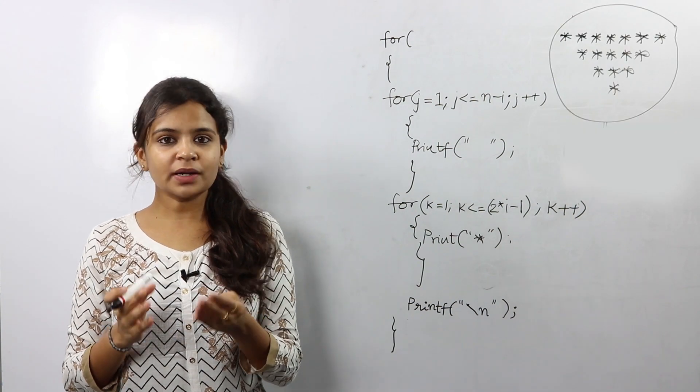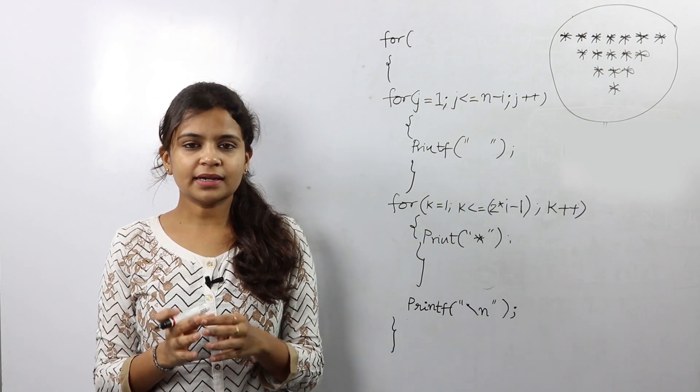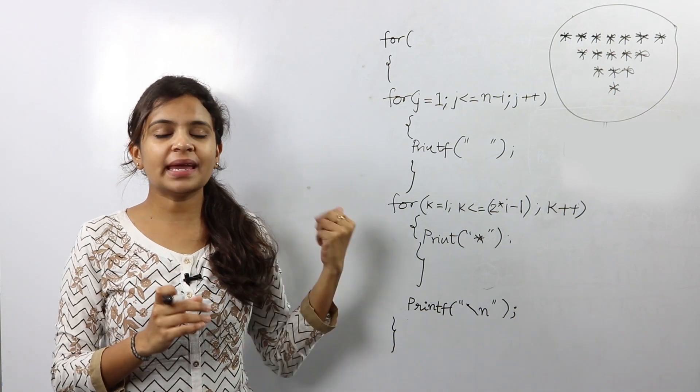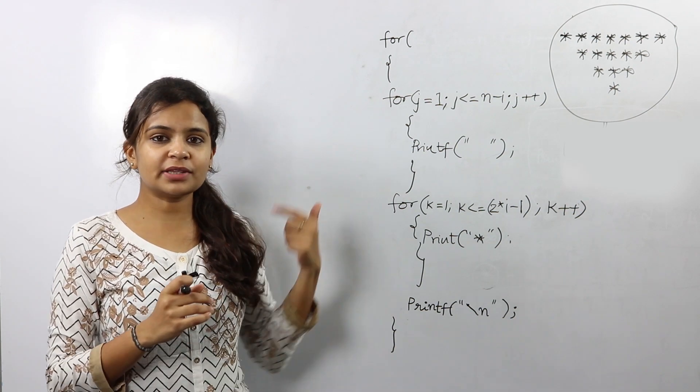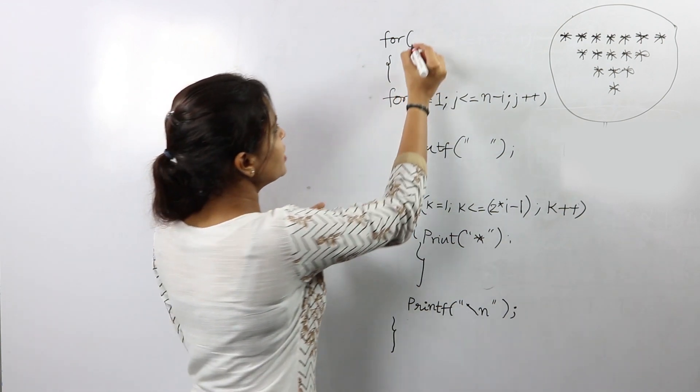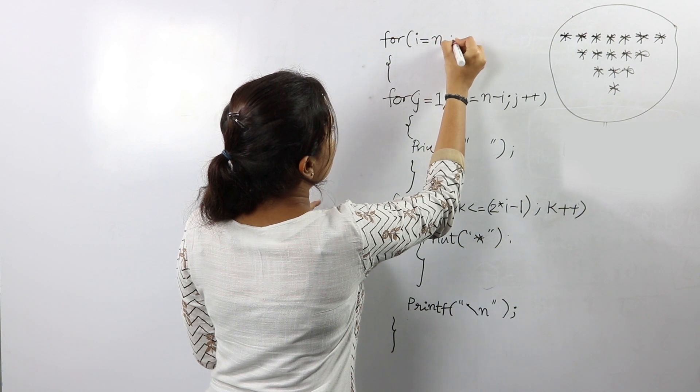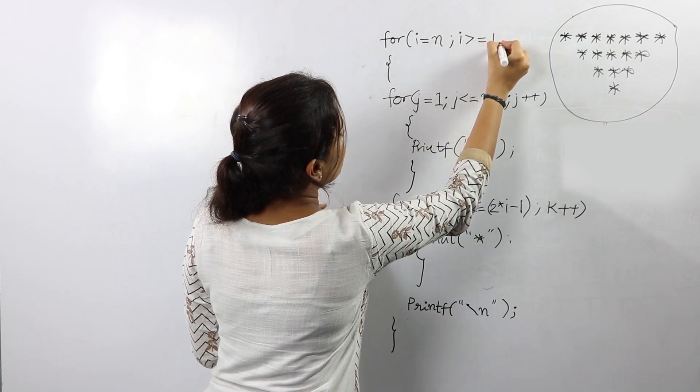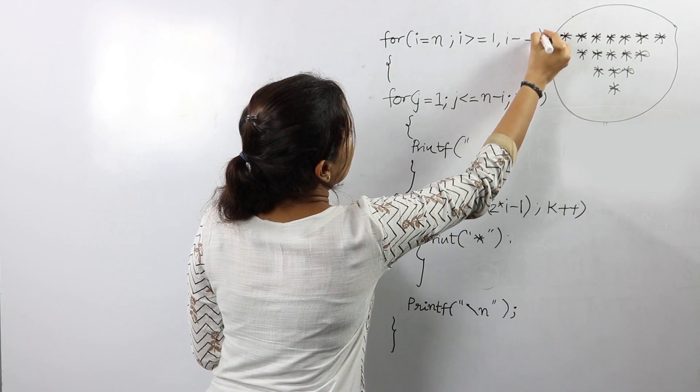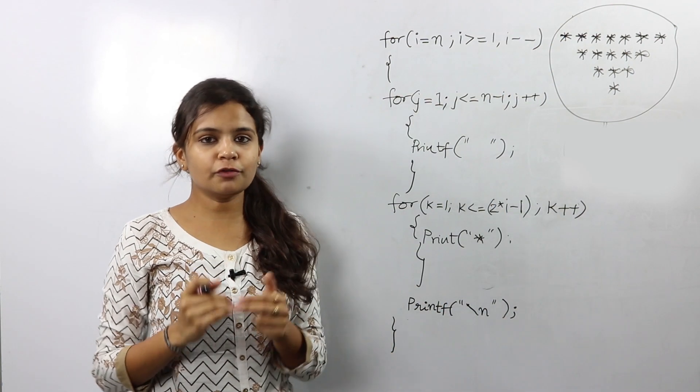So next is inverted full pyramid, a pattern of something of this sort. So if you analyze it, the only change that we need to make in our existing code is with respect to the outer for loop which is the ith loop. So this loop now changes to i is equal to n to i greater than or equal to 1, i minus minus. That's it guys, this gives us the logic for inverted full pyramid.